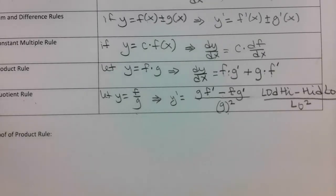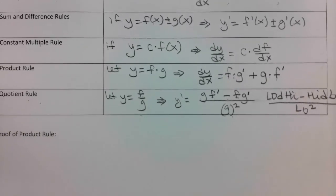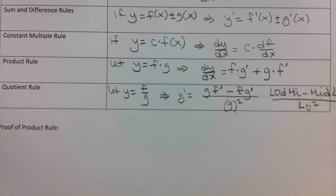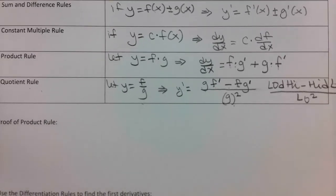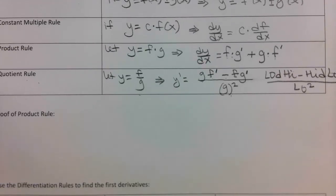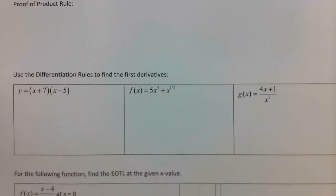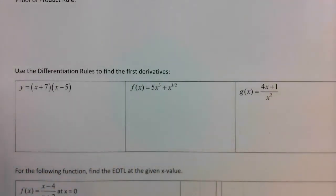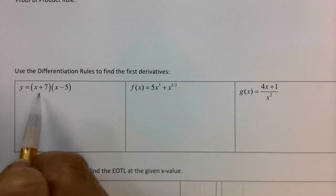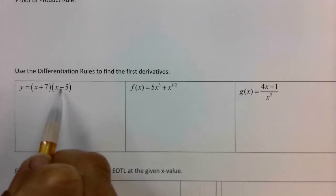You're going to come up with your own way to keep those things straight. You'll have a note card, and hopefully after doing the quotient rule enough times you won't have to look back every time. Let's practice first, and then we'll come back and hit the proof. Use the differentiation rules to find the first derivative — write dy/dx. The first one: y equals x plus 7 times x minus 5. So I have a product.